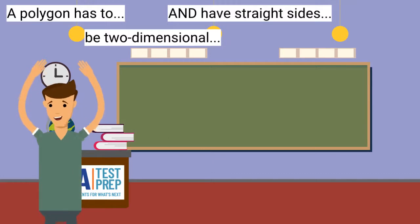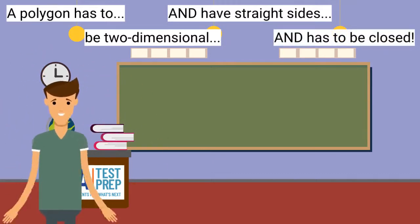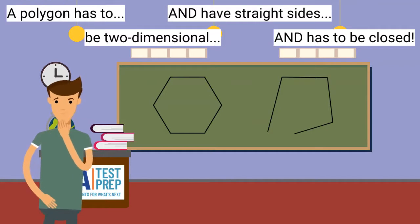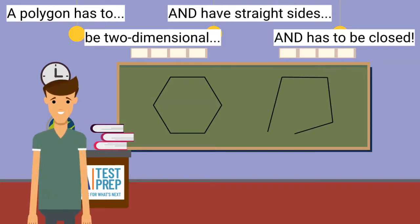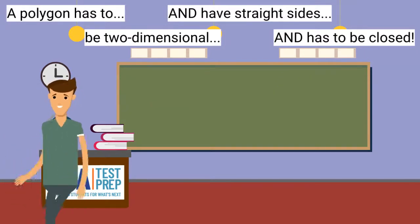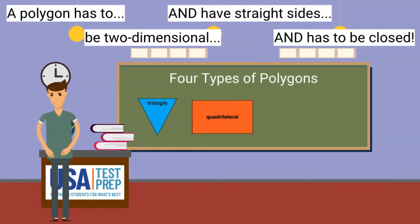Finally, a polygon has to be closed. Look at these two figures. Which of these is a polygon because it is closed? This is a polygon because it is a closed figure. We will be reviewing four different types of polygons today. Let's go to the chalkboard to review them.